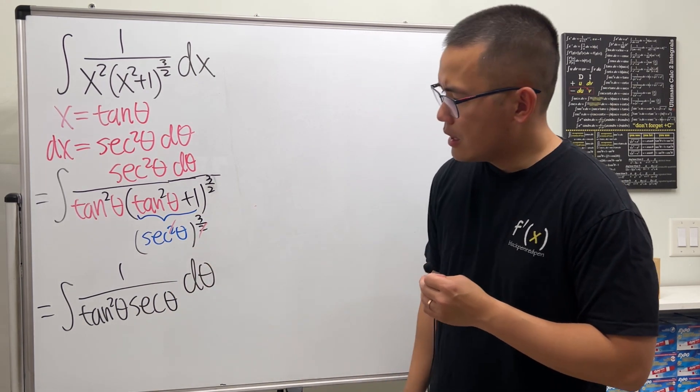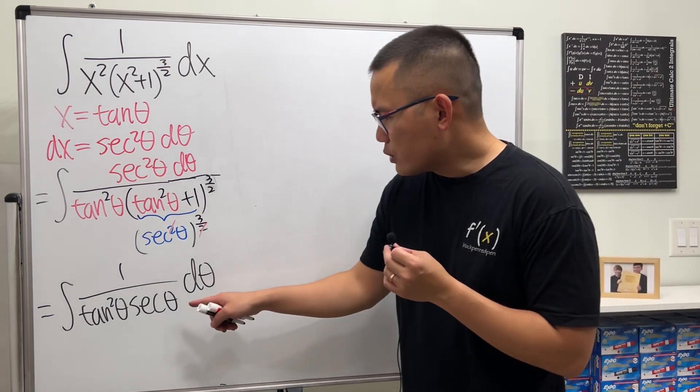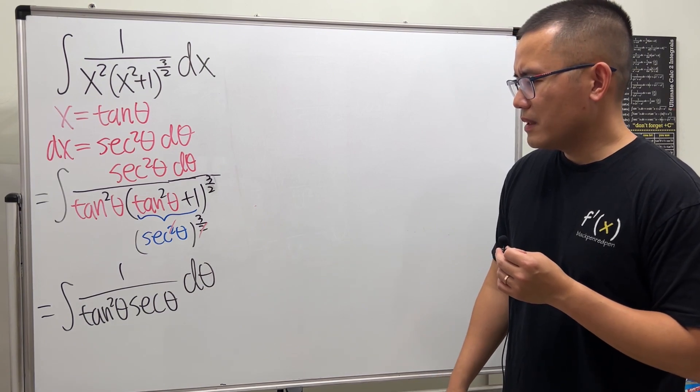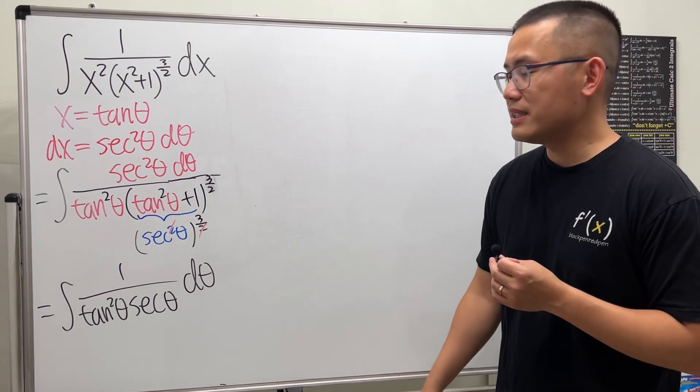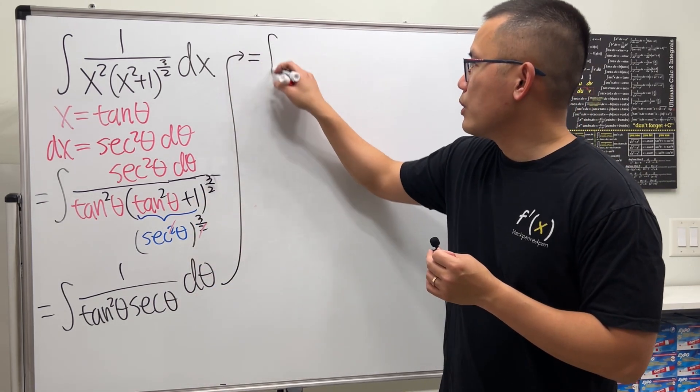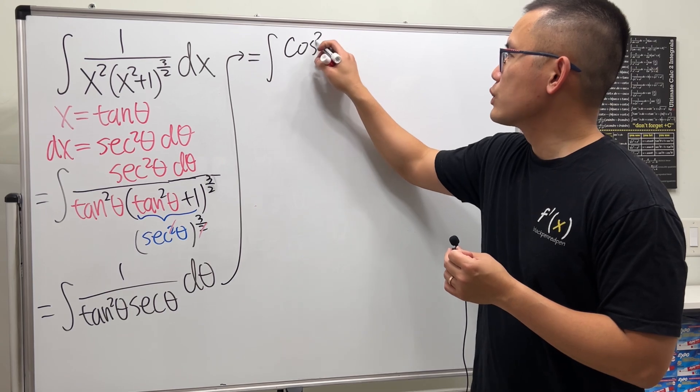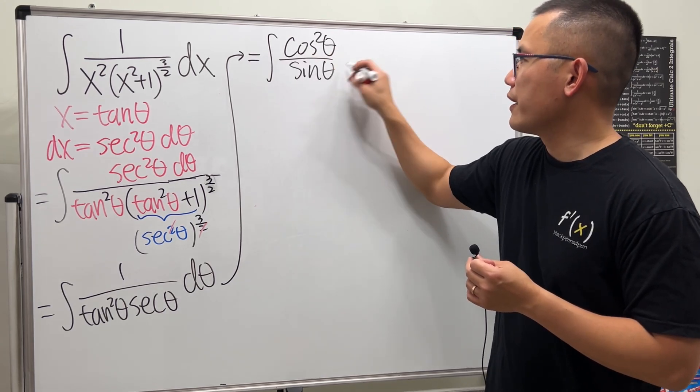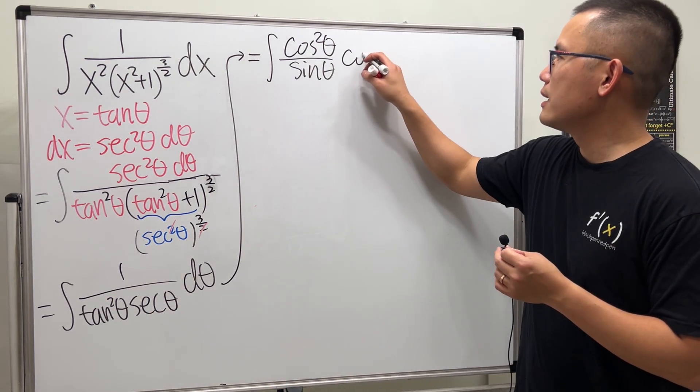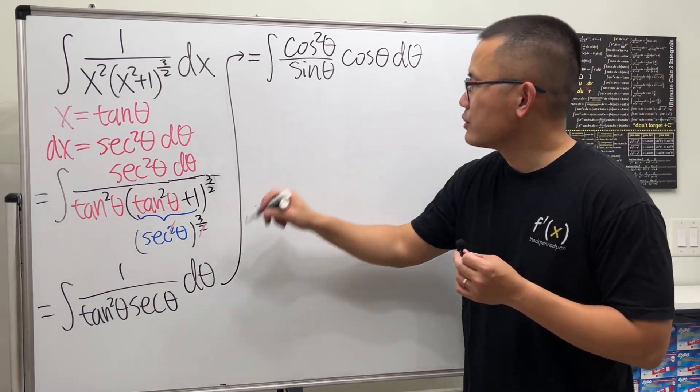How are we going to handle this integral? Unfortunately, both the secant and tangent squared are on the bottom, so maybe it's a good idea to work with sine and cosine instead. Let's go ahead and change that.